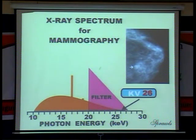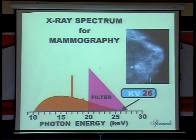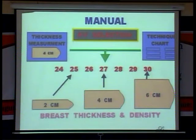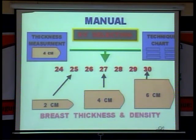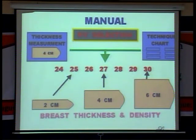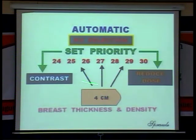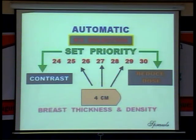Looking at the X-ray spectrum, you can see the photon energy for molybdenum and rhodium with the filter overlap. The ideal KV is around 26 KV — that is what the radiographer will use. Depending upon the breast thickness: for 2 cm breast you give 25 KV, for 4 cm breast 27 KV, and for 6 cm breast thickness the kV varies accordingly. Overall, breast thickness and density determine the kV, which varies from 25 to 30 KV. Automatically, it will set the priority for contrast and dose reduction in the automatic exposure control.